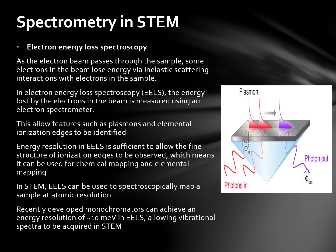There are various types of spectrometry in STEM. Firstly, we have electron energy loss spectroscopy, EELS. As the electron beam passes through the sample, some electrons lose energy via inelastic scattering interactions with electrons in the sample. The energy lost is measured using an electron spectrometer, allowing features such as plasmons and elemental ionization edges to be identified. Energy resolution in EELS is sufficient to allow the fine structure of ionization edges to be observed, enabling chemical mapping and elemental mapping. In STEM, EELS can be used to spectroscopically map a sample at atomic resolution. Recently developed monochromators can achieve an energy resolution of 10 meV in EELS, allowing vibrational spectra to be acquired.